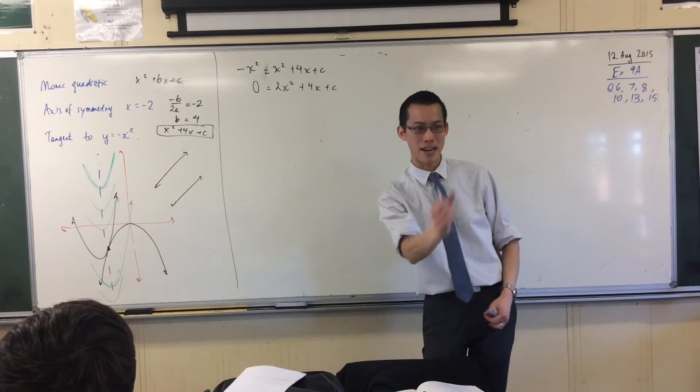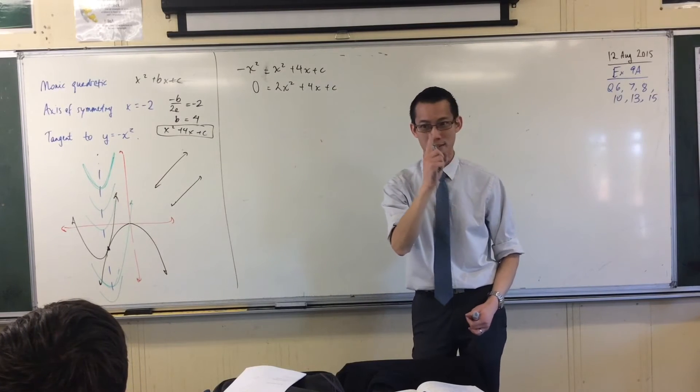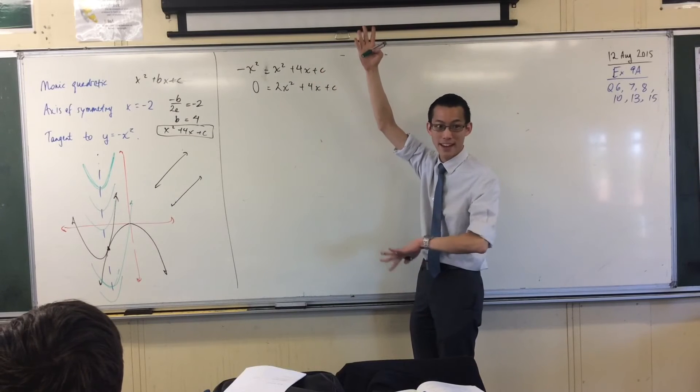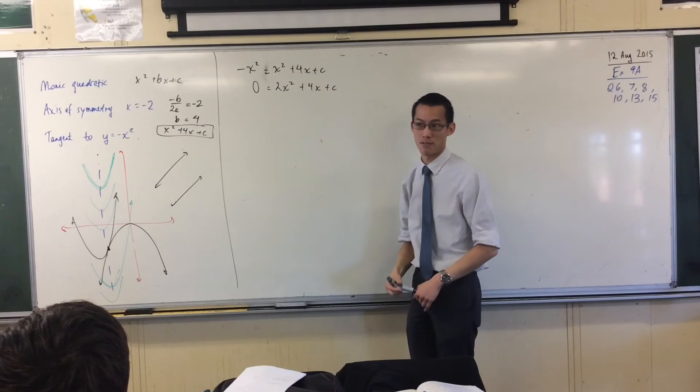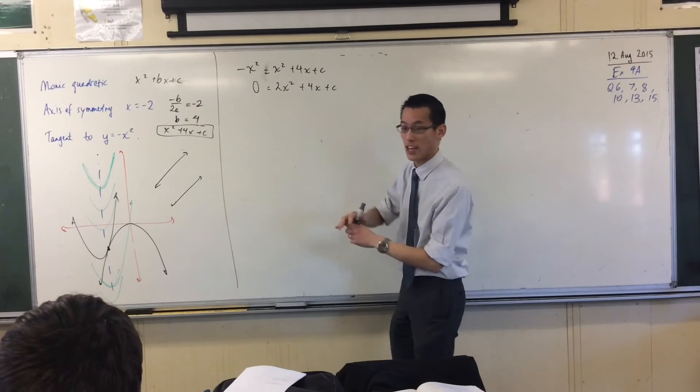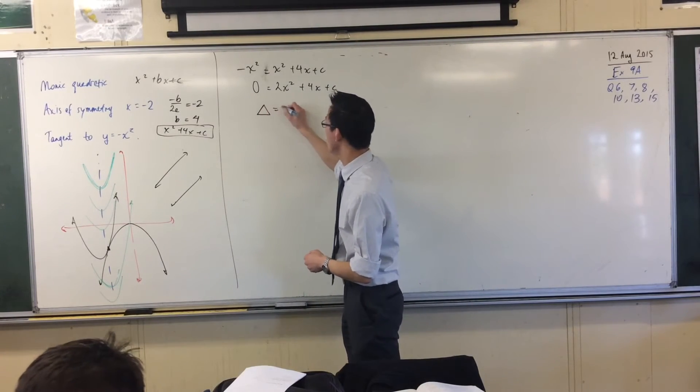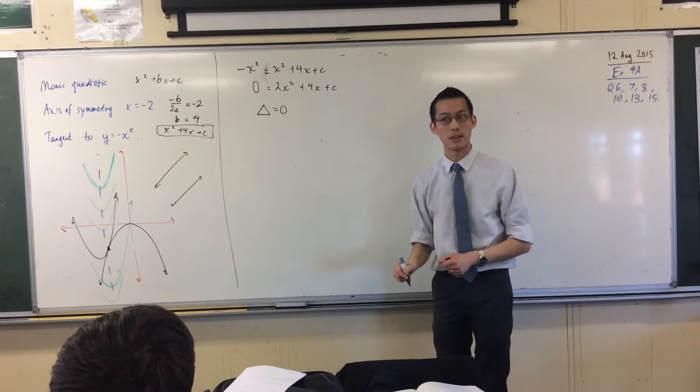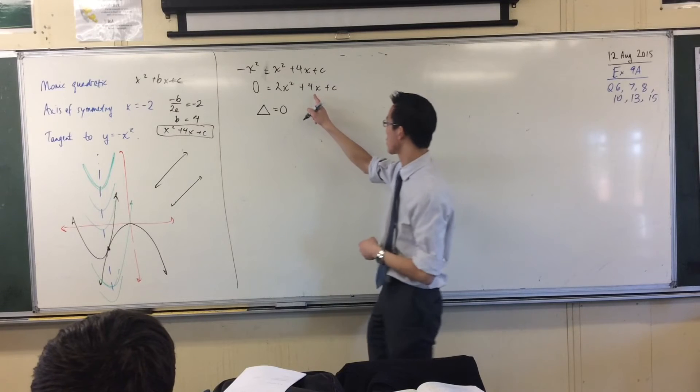What I want, of course, is I want exactly one solution. Which is when the discriminant is not positive, nor negative, but zero. Does that make sense? So for this particular quadratic, which gives me the points of intersection, I only want there to be one point of intersection. And that's the discriminant being equal to zero. So let's just quickly give this a crack.